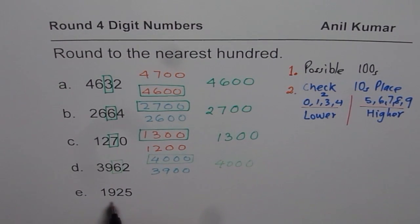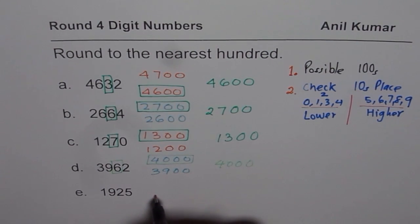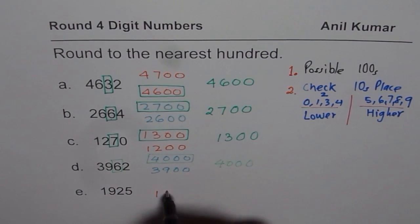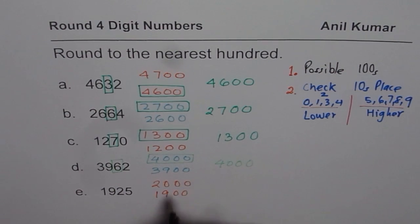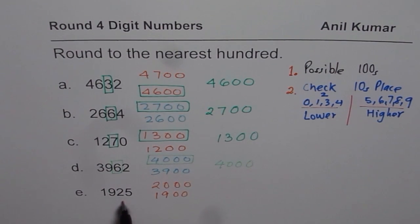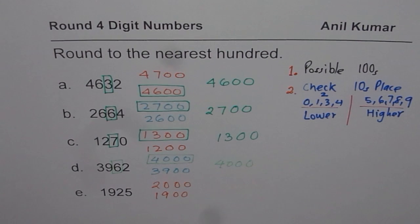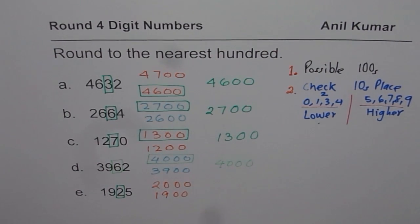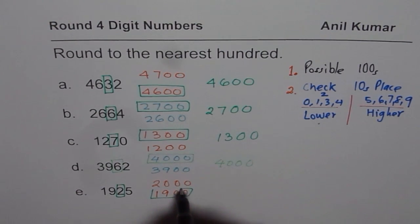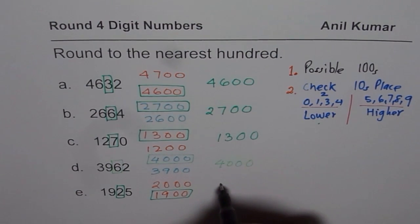Last, 1,925 is between 1,900 and likewise 2,000. 1,925 is between these two hundreds: 1,900 and 2,000. Now we need to check the number in tens place. In this case, it is 2, which is lower. And therefore we will round it to the lower number, 1,900.